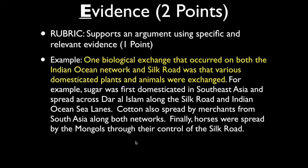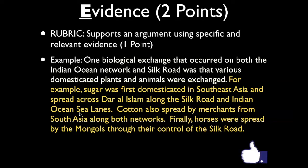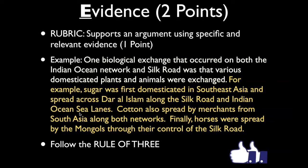Here's an example. Topic sentence: 'one biological exchange that occurred on both the Indian Ocean network and the Silk Road was that various domesticated plants and animals were exchanged.' Now here's the evidence: 'For example, sugar was first domesticated in Southeast Asia and spread across Dar al-Islam along the Silk Road and Indian Ocean sea lanes. Cotton also spread by merchants from South Asia along both networks. Finally, horses were spread by the Mongols through their control of the Silk Road.' That's at least three to four pieces of specific evidence, which is a robust use of evidence in support of an argument.